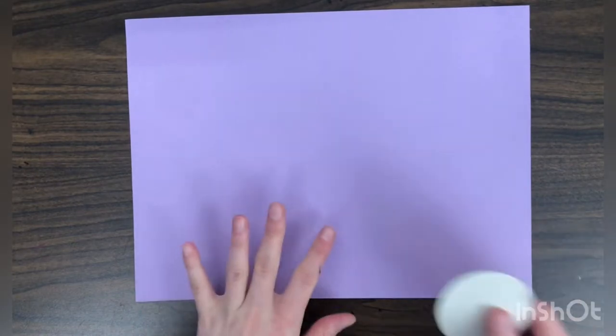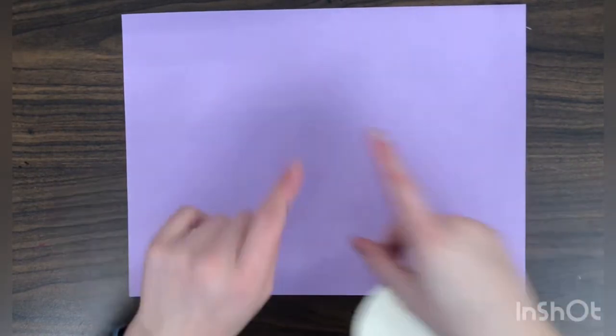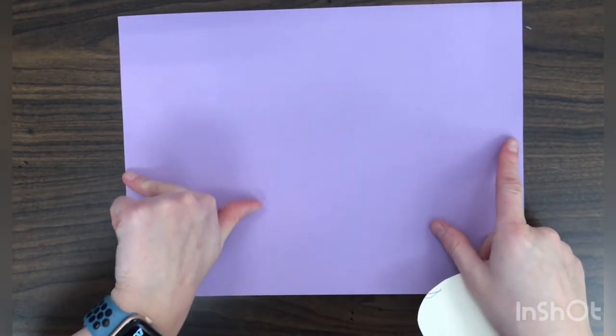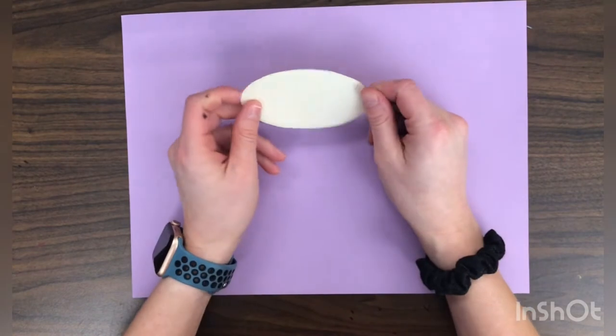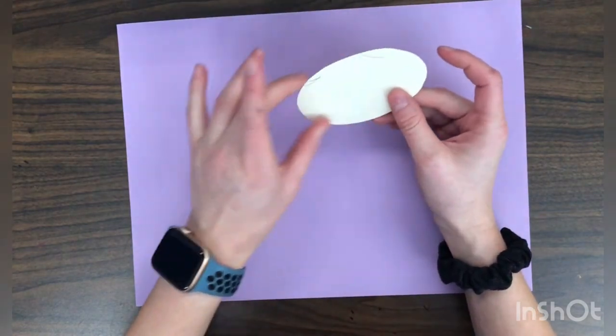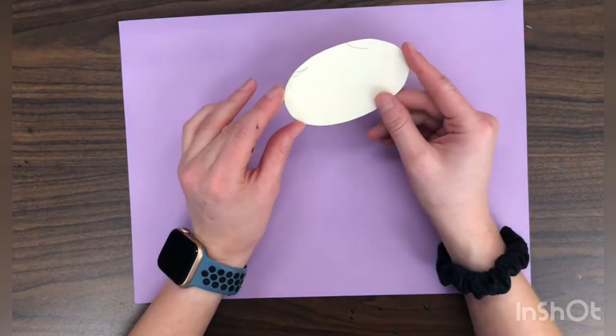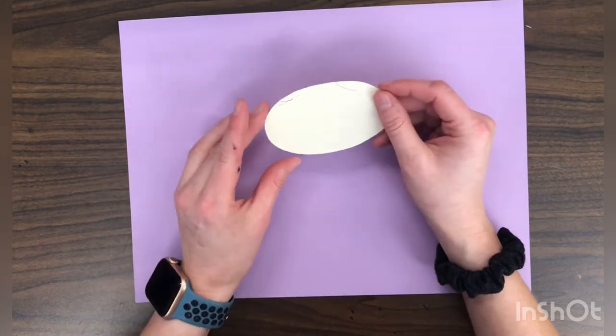To make our balloon dog, you're going to need to get a couple of things to start. You'll need a colored sheet of paper. Remember, if you don't have a colored sheet of paper, you can always color one. You'll need an oval template. So I just cut an oval shape out of another piece of paper. That way, all of my ovals can be the same size.